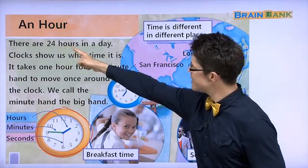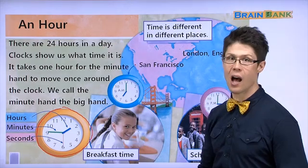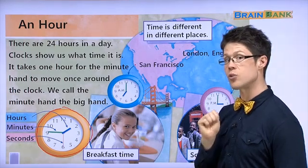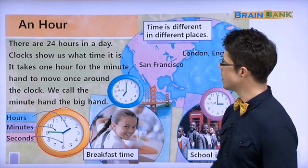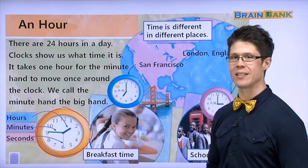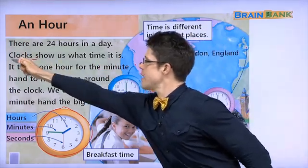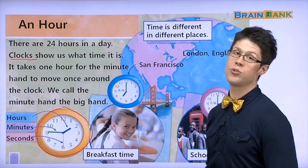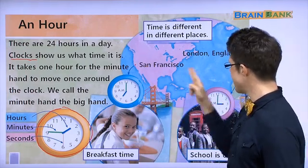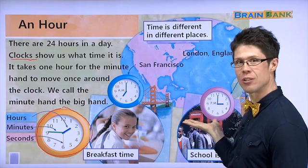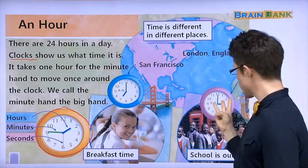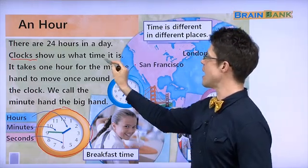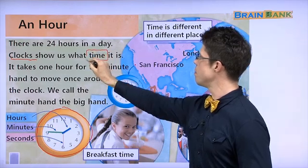There are twenty-four hours in a day — 하루에 스물 네 시간 있어요. There are twenty-four hours in a day. Clocks show us what time it is — we can see the time on a clock. 시계에서 몇 시간인지 볼 수 있어요. How many clocks are on this page? One, two, three — this page has three clocks. Clocks can show us the time. 시계는 볼 수 있어요.